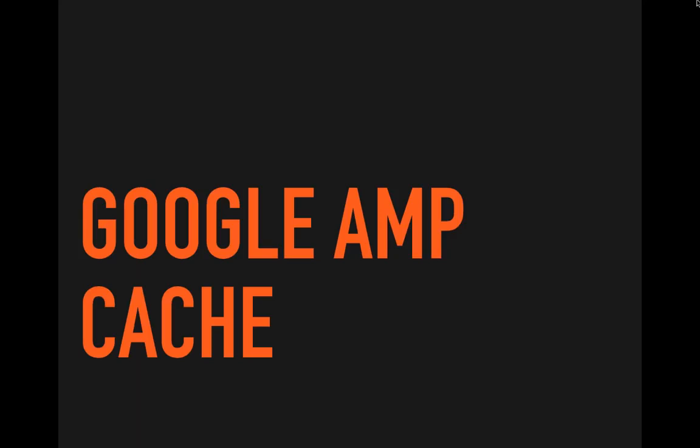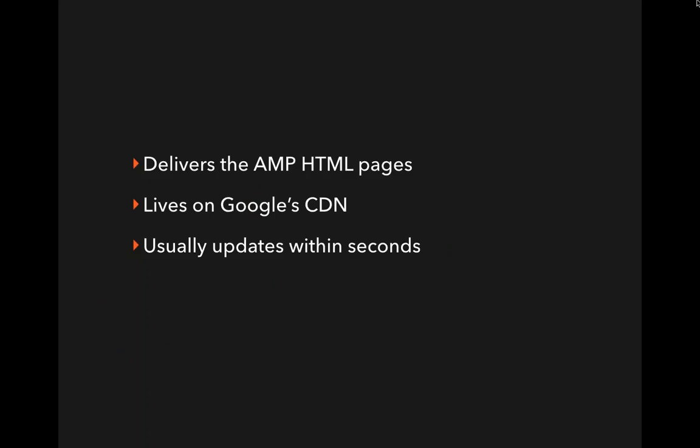Finally, you have the Google AMP Cache. This delivers the AMP HTML pages — the pages live on Google CDN, which is where they are delivered from. They update within seconds, so if you make a change to the page after you've published it, Google knows about that change and is able to update their version of your page on their CDN.